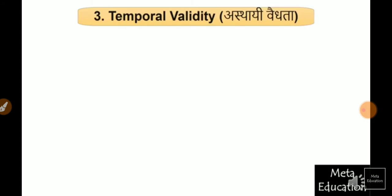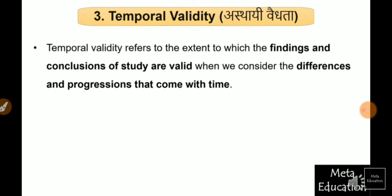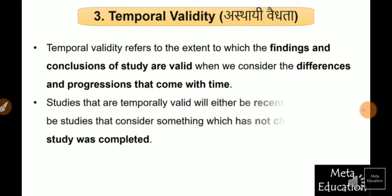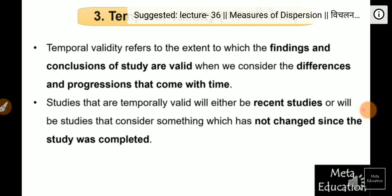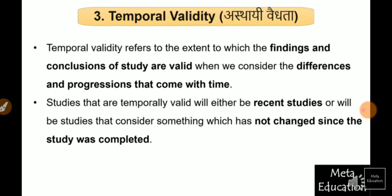Temporal validity refers to the extent to which the findings and conclusions of a study are valid when we consider the differences and progression that come with time. Studies that are temporally valid will either be recent studies or will be studies that consider something which has not changed since the study was completed. So if we consider the changes during the time and our findings remain the same and valid, then we can say that our study has temporal validity.